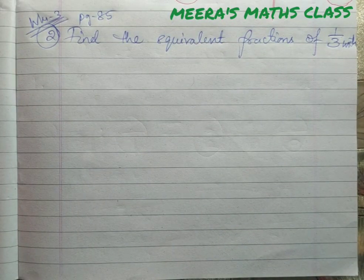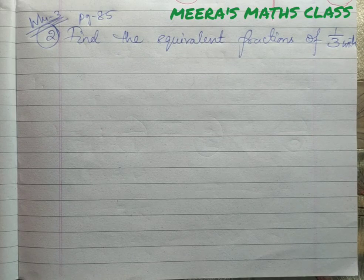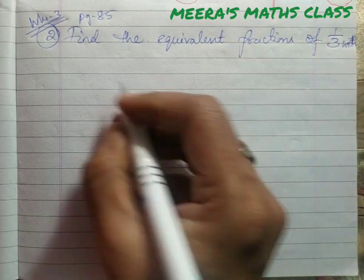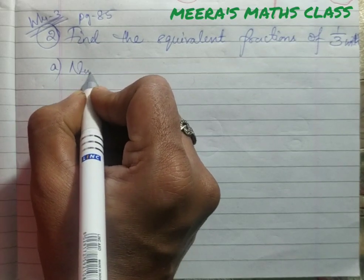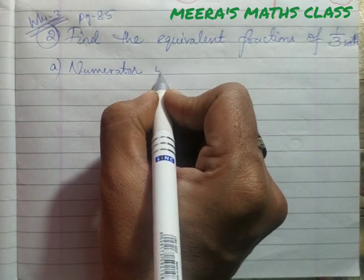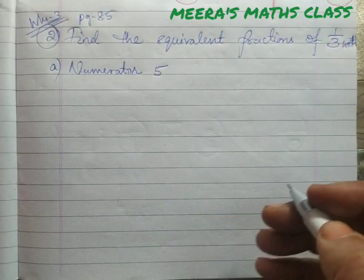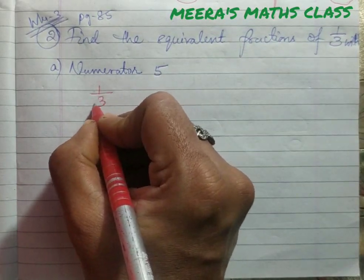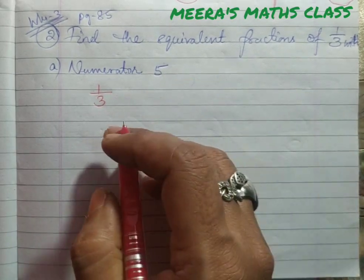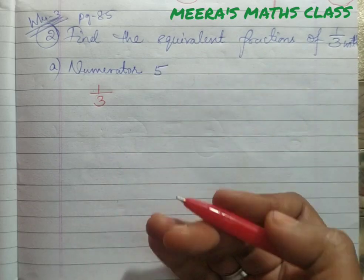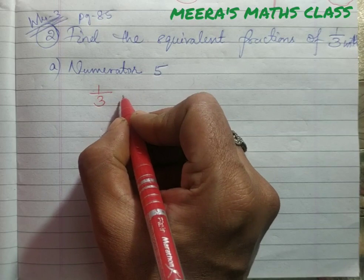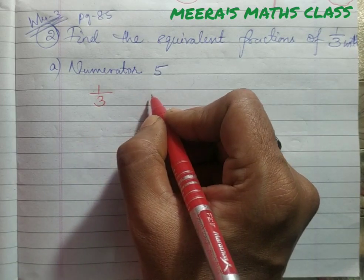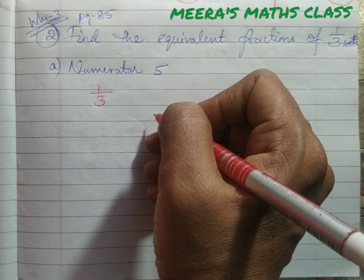Find the equivalent fractions of 1 by 3. So 1 by 3 is our base fraction, from which we are going to make more equal fractions. Please use a blue color pen — I'm using different colors to help you understand better. Find the equivalent fractions of 1 by 3 with numerator 5.